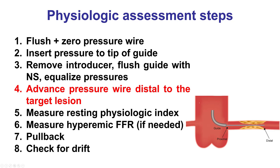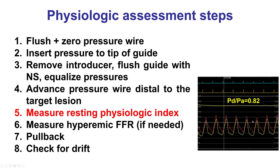Step four is to advance the pressure wire distal to the target lesion. This can sometimes be challenging because pressure wires are not quite as torqueable as standard wires, but in the vast majority of cases they can be delivered. Step five is to measure a resting physiologic index depending on the system being used.